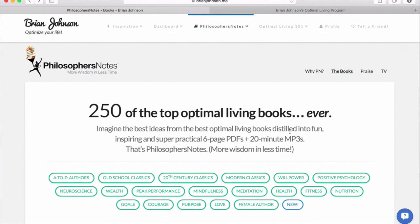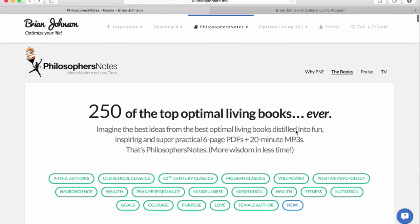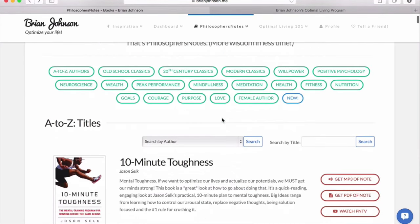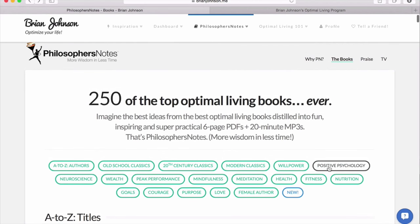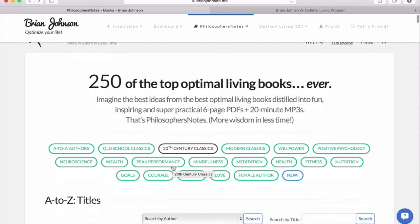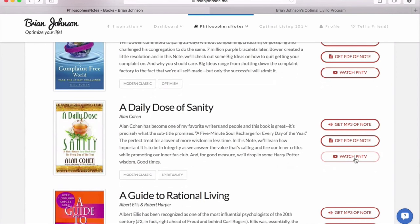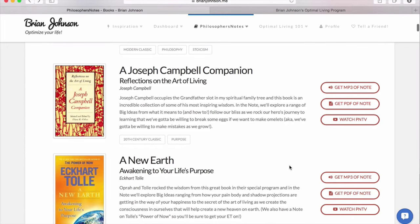Hi, this is Brian. I hope you enjoyed that PNTV episode. A lot of people don't know all the stuff I do beyond these free videos I share on YouTube. So I thought I'd do a quick video to give you an overview of our membership program that you can get access to and get a ton of other stuff. So here's a quick look. 10 bucks a month. Join the Optimal Living membership program. You get instant access to 250 Philosopher's Notes on some of the best Optimal Living books out there. Old school classics, positive psychology, modern stuff, mindfulness, peak performance, purpose, neuroscience, wealth, etc.